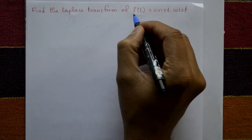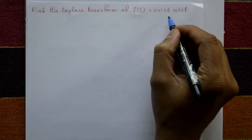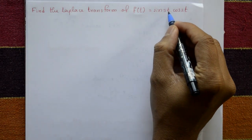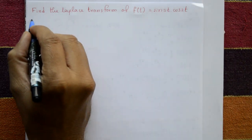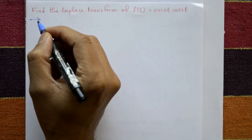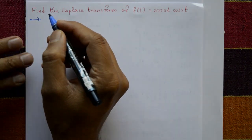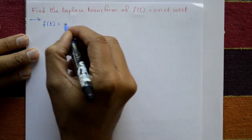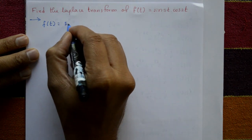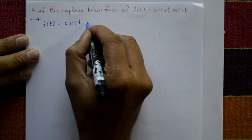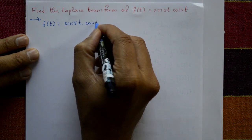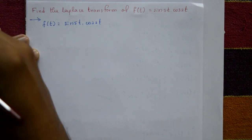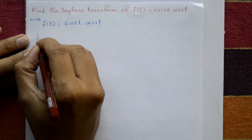Find the Laplace transform of f(t) = sin(5t)·cos(2t). The given function is f(t) = sin(5t)·cos(2t).